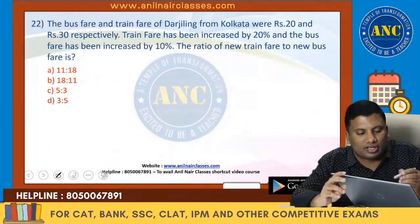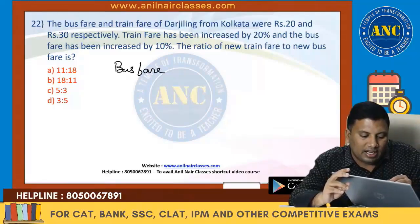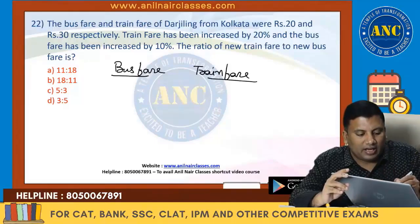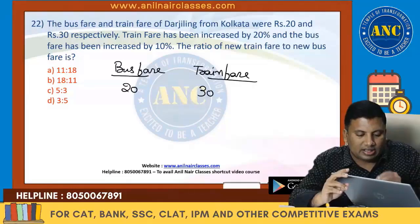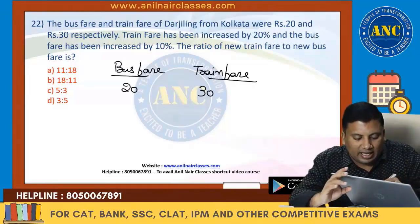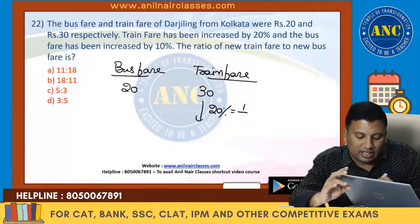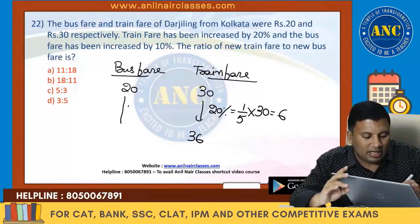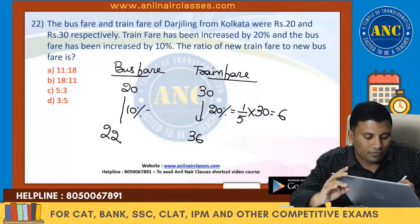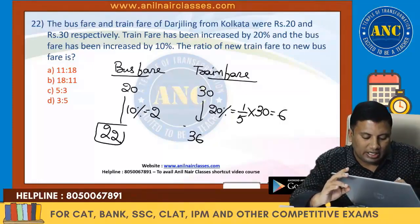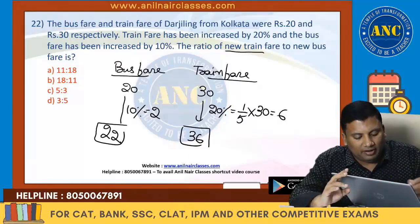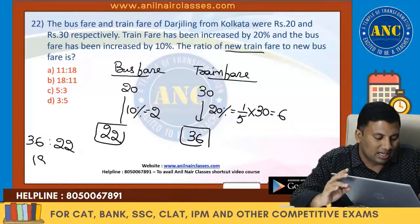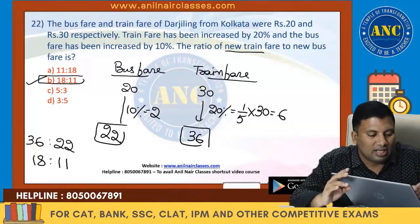22nd question — easy. Bus fare from Darjeeling to Kolkata is 20 rupees. Train fare is 30 rupees. Train fare increased by 20%: 1/5 of 30 = 6, new train fare = 36. Bus fare increased by 10%: 1/10 of 20 = 2, new bus fare = 22. Ratio of new train fare to new bus fare = 36 : 22. Don't do 11:18 — it's reversed. Answer is 18:11.